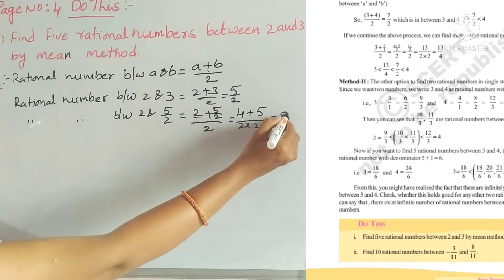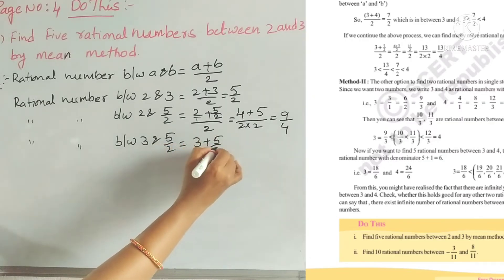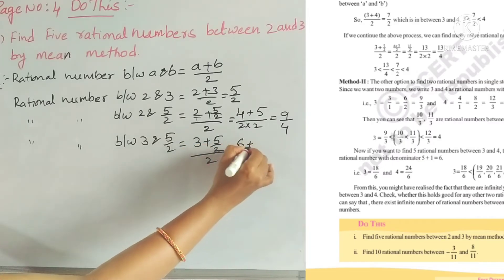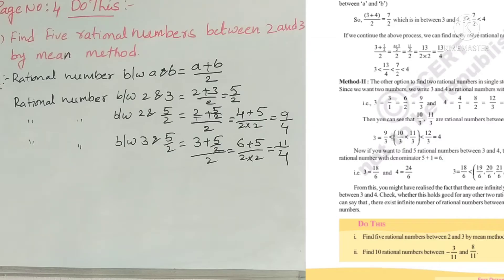Again, between 3 and 5 by 2, we find (3 plus 5 by 2) divided by 2. That's (2 times 3 is 6, plus 5) divided by (2 times 2), which equals 11 by 4. So now we've found three rational numbers.